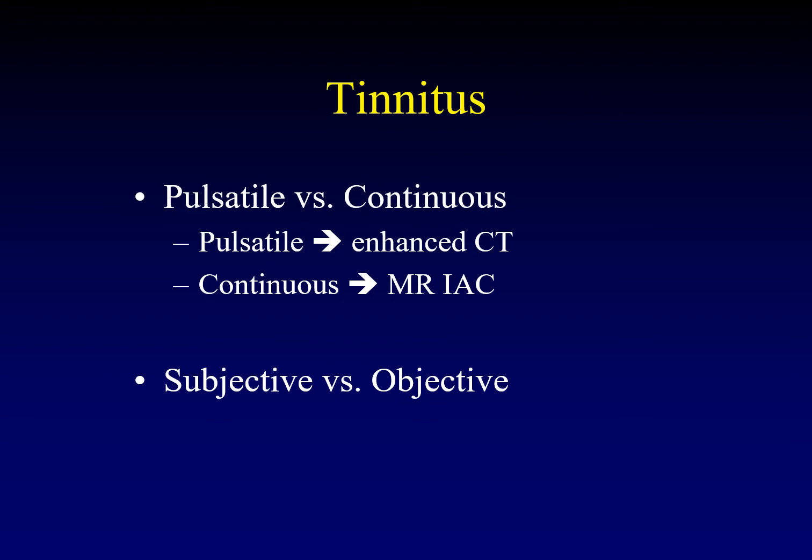We image pulsatile tinnitus with contrast-enhanced CT of the temporal bone or CT angiography, which are not that different from one another. We do this to look at the vascular structures that are usually the source of pulsatile tinnitus. For continuous tinnitus, we use MRI of the temporal bones and internal auditory canal, because we're looking for lesions of the cerebellopontine angle cistern and brainstem.